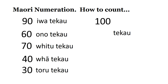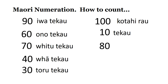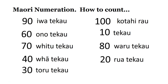Number one hundred — kotahi rau. Te kau — remember what that means? Number ten. Eighty — waru te kau. Number twenty — rua te kau. Number fifty — rima te kau.